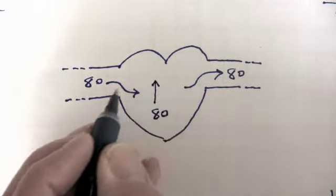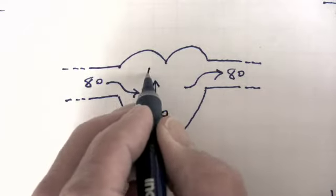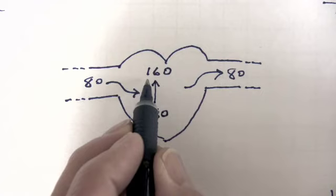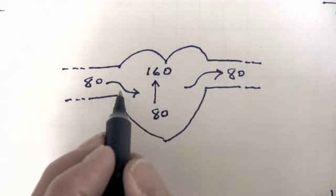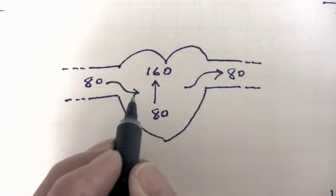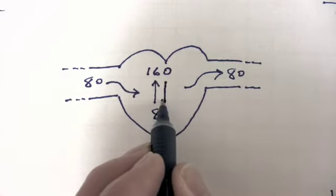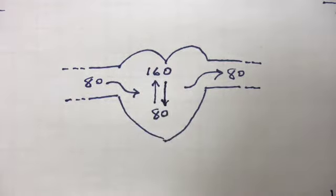If 80 enters the heart, the volume of blood at the end of diastole would be 160. Remember, blood enters the heart during diastole. The heart contracts once again. The blood exits the heart. And let's assume 80 milliliters leaves the heart.